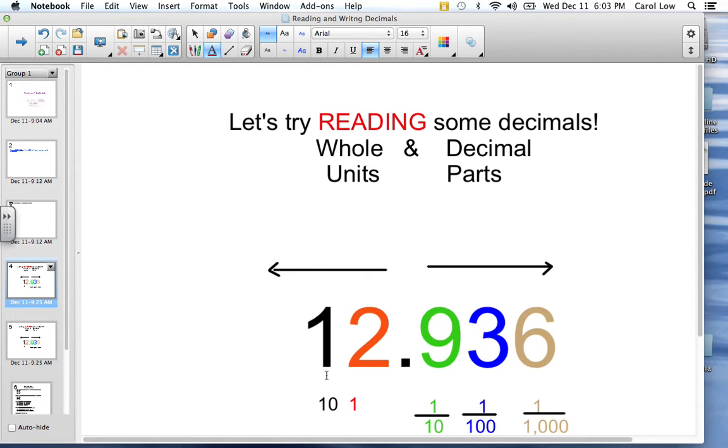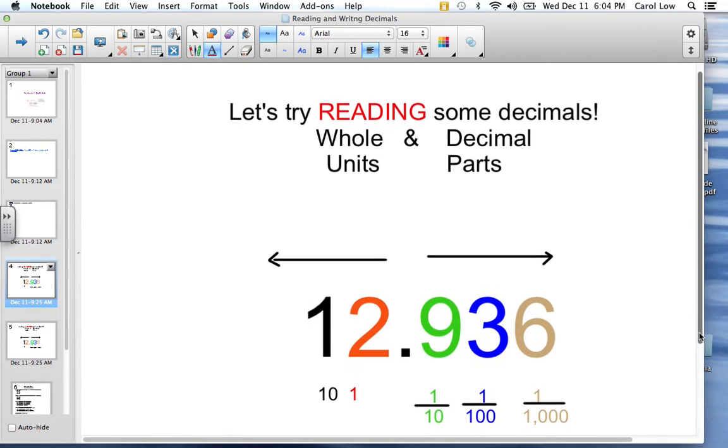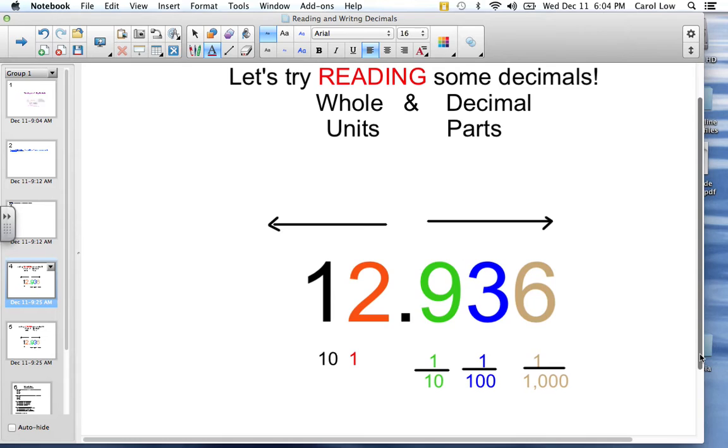So remember, this is the whole part of the number. It's to the left of the decimal point. Here's the decimal point, and here is what's after the whole number. And tonight we're just going to go into up to thousands. So this is tenths, hundredths, and thousandths. And this is the tens column and the ones column.